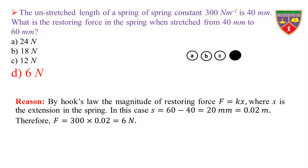Reason: by Hooke's Law, the magnitude of restoring force F = K × X, where X is the extension in the spring. In this case, X = 60 − 40 = 20 mm = 0.02 m. Therefore, F = 300 × 0.02 = 6 N. Hence, the restoring force is 6 N.